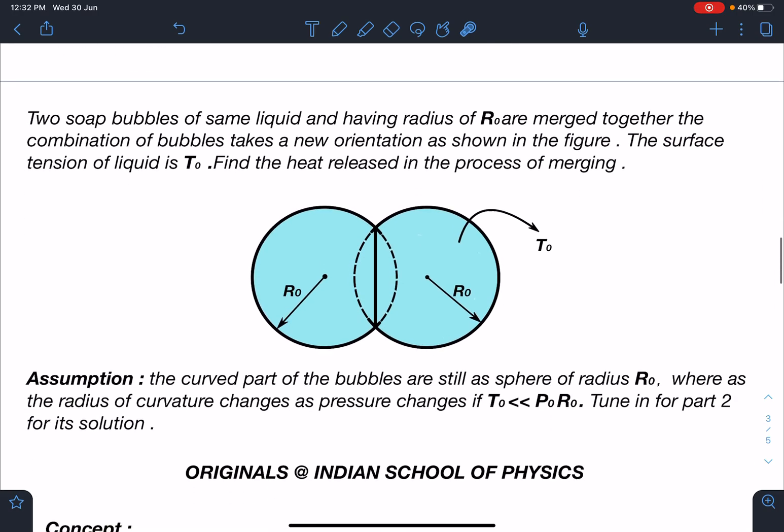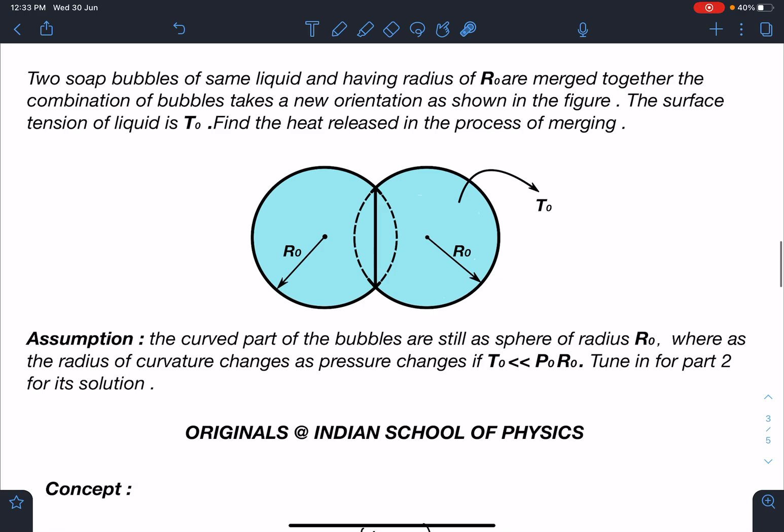So here is the problem statement: two soap bubbles of same liquid and having radius of R₀ are merged together. The combination of bubbles takes a new orientation as shown in the figure. The surface tension of liquid is T₀. Find the heat released in the process of merging.